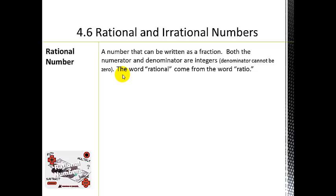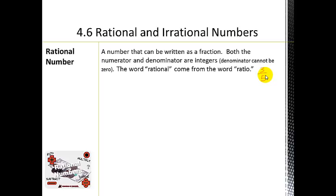Just to give you a little background, the word rational came from the word ratio. A ratio is just a comparison of two things — for example, three cupcakes for every five slices of pizza. That is a ratio, a comparison of two things. So if a number can be written as a fraction where the denominator and numerator are integers, we consider it to be a rational number.